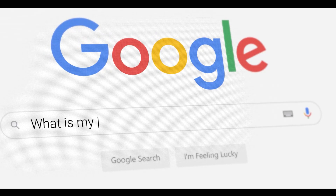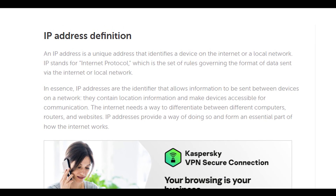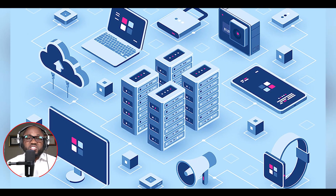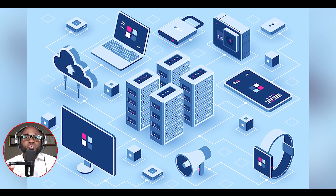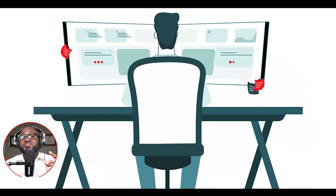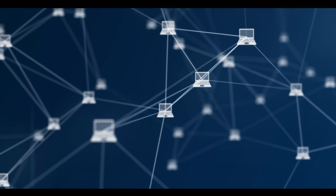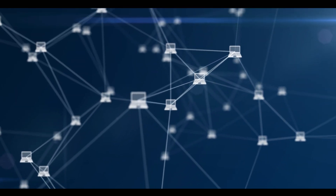An IP address is a unique address that identifies a device on the internet or a local network. IP stands for Internet Protocol, which is a set of rules governing the format of data sent via the internet or a local network. In essence, IP addresses are the identifier that allows information to be sent between devices on a network. They contain location information and make devices accessible for communication. The internet needs a way to differentiate between different computers, routers, and websites. IP addresses provide a way of doing so and form an essential part of how the internet works.